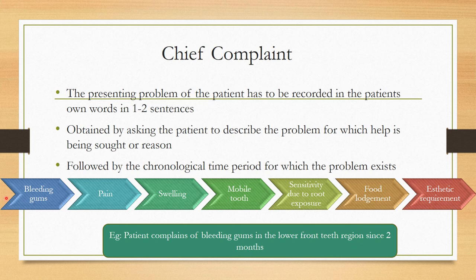In periodontics, common complaints include bleeding gums, pain, swelling, mobile tooth, sensitivity due to root exposure, food lodgment, and aesthetic requirement. The chief complaint should be written in the patient's own words and should be a periodontal complaint. If the patient simply wants a routine cleanup, that can also be recorded as 'came for routine cleaning of teeth.'